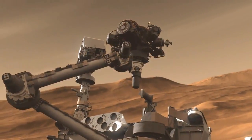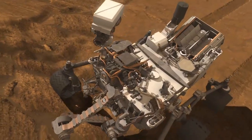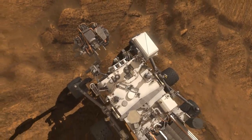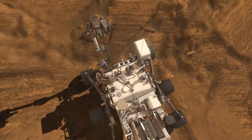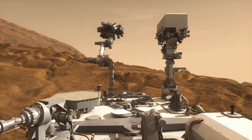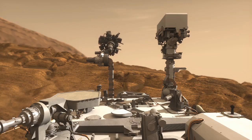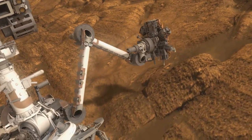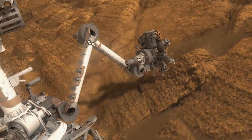A hand lens imager to take extreme close-up pictures of rocks and soil, revealing details smaller than the width of a human hair. An alpha particle X-ray spectrometer to detect different elements in rocks and soils. A camera mounted on the mast, capable of capturing images of the rover's surroundings in high resolution and color.